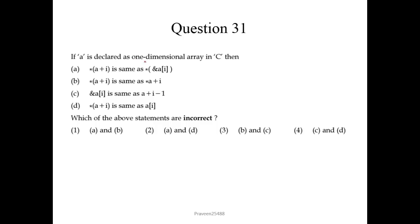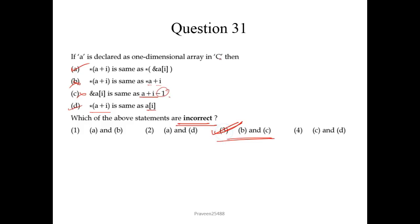Question number 31: if A is declared as a one-dimensional array in C, then: *(a + i) is the same as &a[i] — correct; *a + i is the same as *a + i (not a valid equivalence as stated) — wrong; &a[i] is the same as a + i (not a minus 1) — also wrong; *(a + i) is the same as a[i] — correct. The question asks which statements are incorrect. B and C are incorrect, so we choose option 3.